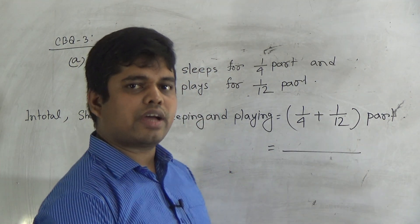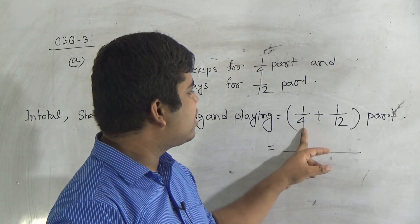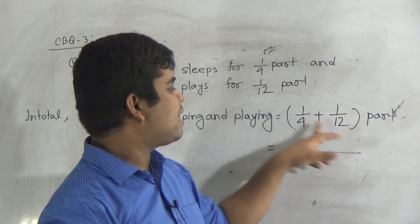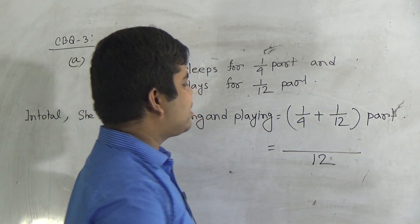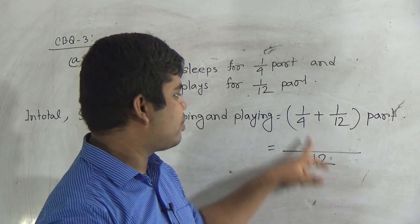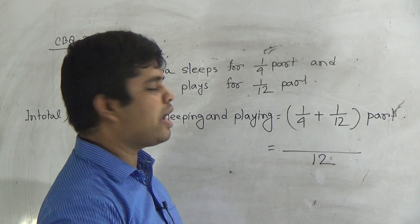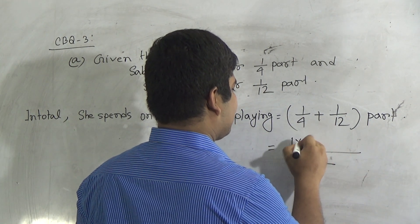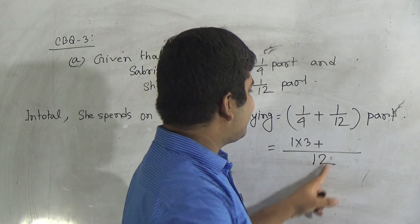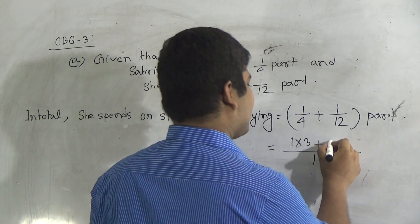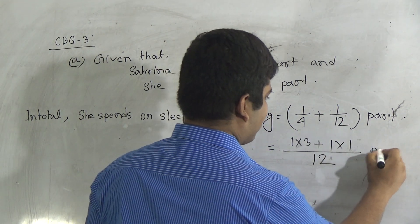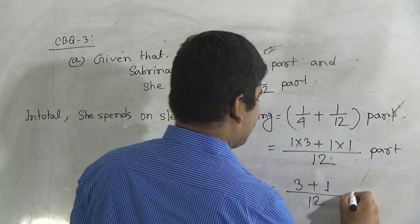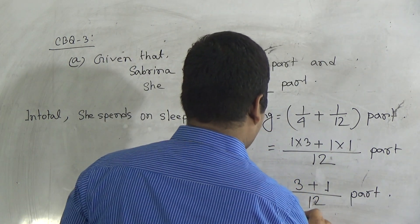In order to do addition, we first find out the LCM of the denominators, which are 4 and 12. Since 4 is a factor of 12, the LCM is 12. We divide 12 by 4 and get 3; that 3 is multiplied with numerator 1, giving 3. Then 12 divided by 12 gives 1, multiplied with numerator 1, giving 1. So we have 3 plus 1 over 12, which gives 4/12.